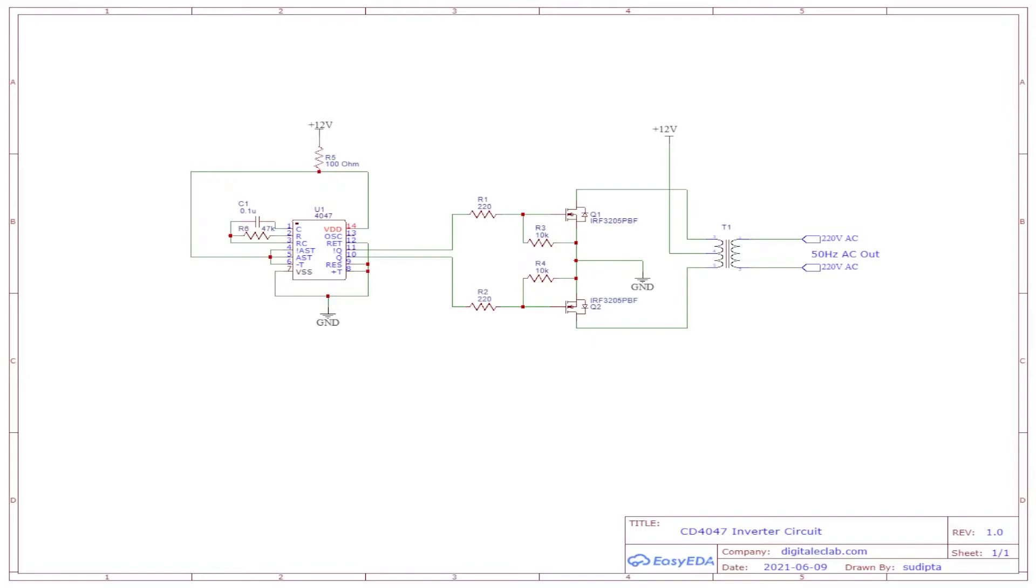So here I have the circuit diagram that I have made in the PCB. Obviously the main chip here is the CD4047 which is connected using the pin 10 and 11 to the gate of the MOSFETs. This is a push-pull type configuration where we are using a center tap transformer to step up the voltage from 12 volts to 220 volts.